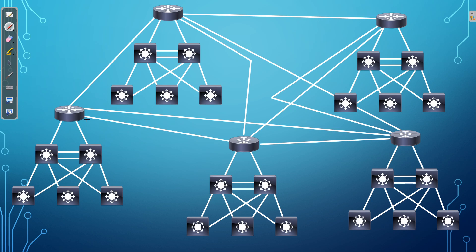Think about it like this: if I wanted to configure one router with static routes so it can reach every single network, we have point-to-point links between layer three switches, each forming their own network. Then we also have the VLANs at each site as well. You can see what I'm saying — it just gets out of hand. It's not feasible because we'll be spending so much time configuring these routes that we won't have time to do anything else.